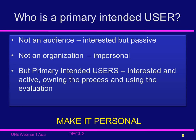So who is a primary intended user? A primary intended user is interested and active, owns the process, and uses the evaluation. The PIU has a direct stake in the evaluation and has the power to use it — it's always a personal choice. In UFE, we identify the user or users by name, such as Mr. X or Ms. Y. The selection of the PIU is a very critical choice because UFE gives them decision-making power over the evaluation.